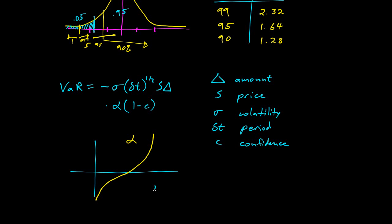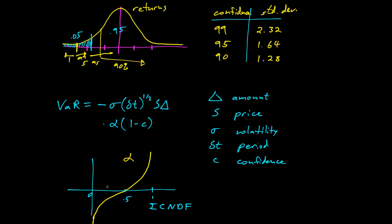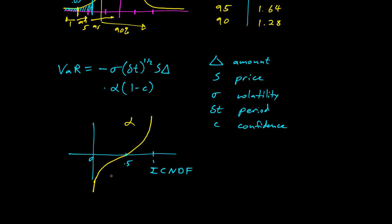Alpha is the inverse cumulative normal distribution function, ICNDF I guess. And you can see it's asymptotically going negative infinity at zero. So this is zero here and here this is 0.5 and here is 1. And so alpha of 0.5 is zero. Alpha of getting closer and closer to 1 is larger and larger. So one minus c, c was our confidence, so 95%. This is 5%, 0.05. Alpha of 0.05 is going to be negative some number, and it will turn out to be negative 1.64.